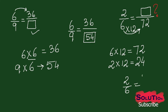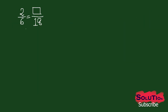So 2 by 6 equals 24 by 72. Now let us find out the missing number with another method. We have two fractions that are equivalent, and that is why in the middle it is given an equal sign. So how to find out the missing number — what we can do is cross multiply.